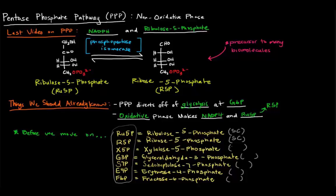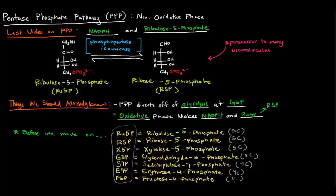The numbers in the names actually indicate where the phosphate is, but the phosphates are all on the ends of these carbon chains. So glyceraldehyde 3-phosphate is a three-carbon molecule, sedoheptulose has seven carbons, erythrose 4-phosphate has four carbons, and fructose 6-phosphate has six carbons. We've actually seen glyceraldehyde 3-phosphate and fructose 6-phosphate before in glycolysis.